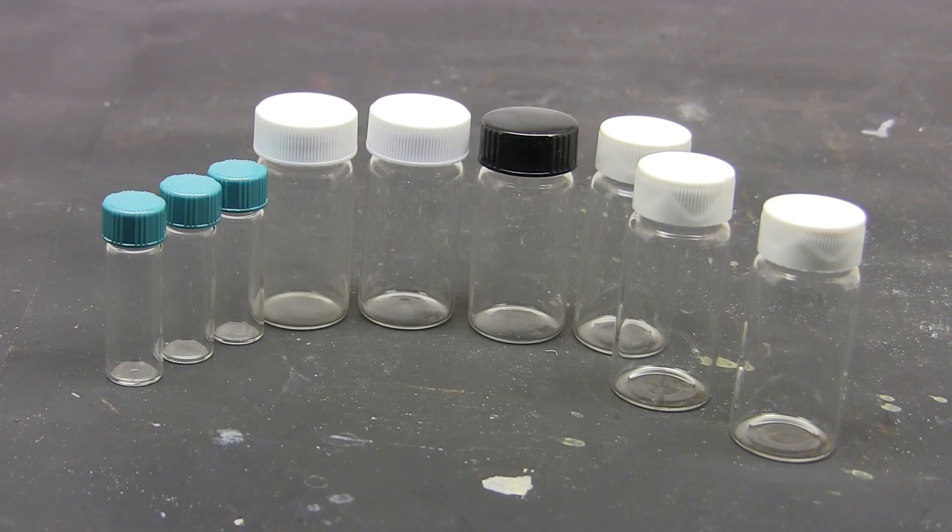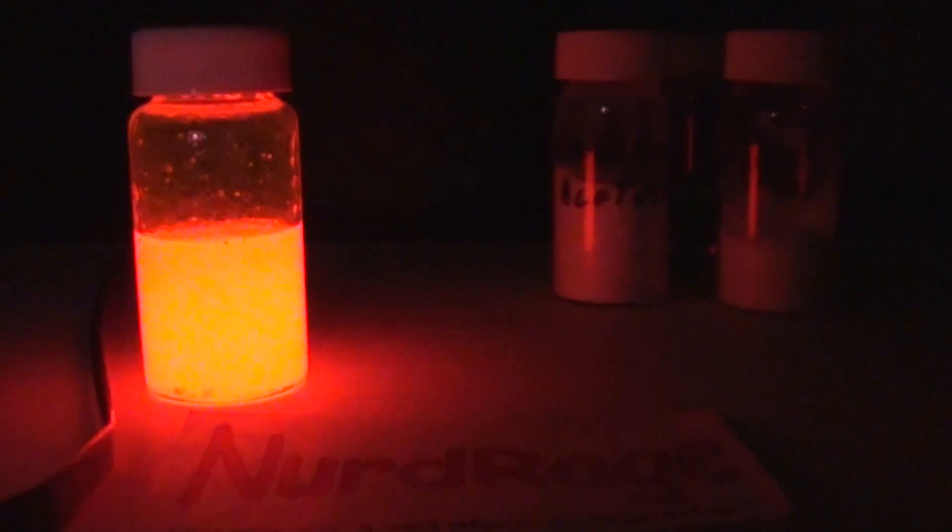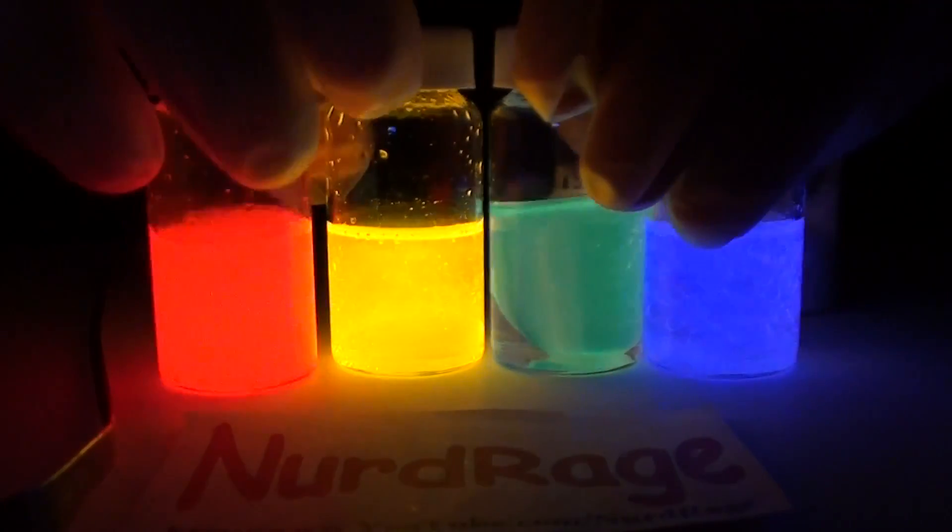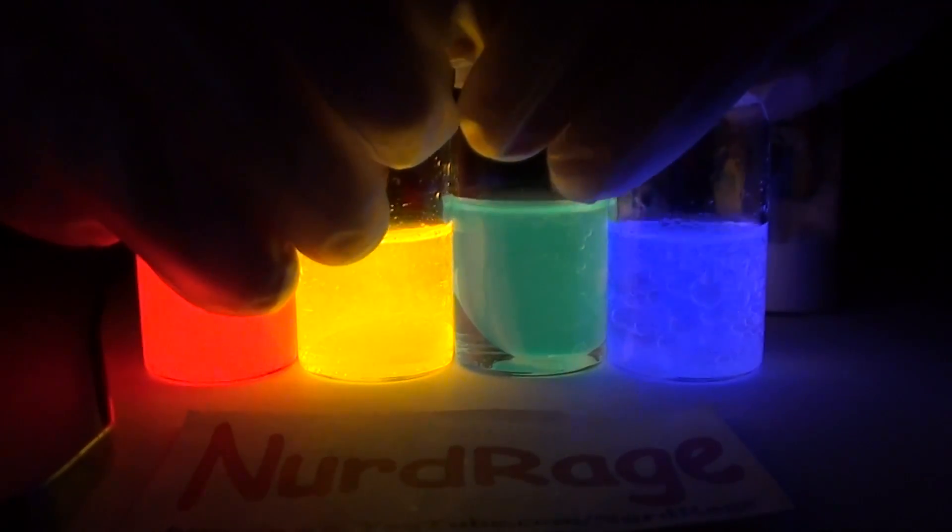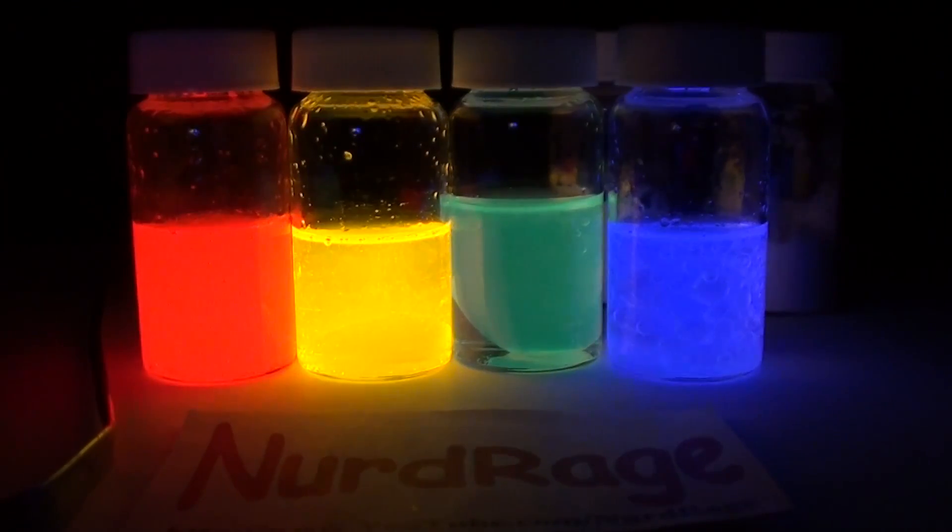Vials are tremendously useful for storing and running small reactions. You've seen me use them in a large number of my videos. Vials have replaced the famous test tube for most chemists. They're self-standing so you don't need a test tube rack, they're easy to stack and store, and so many industries outside of chemistry also use vials, so vials are pretty easy to acquire.